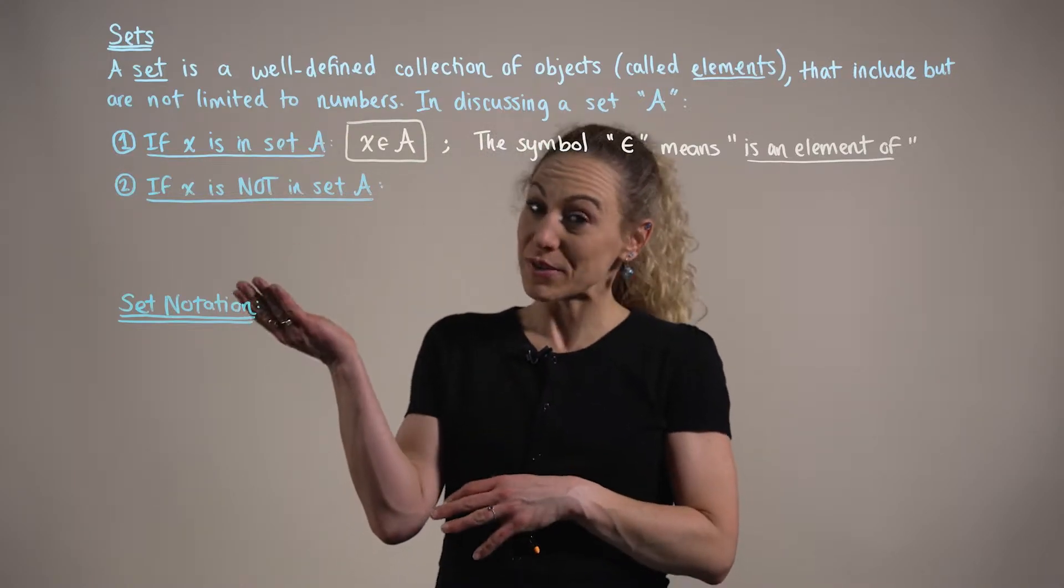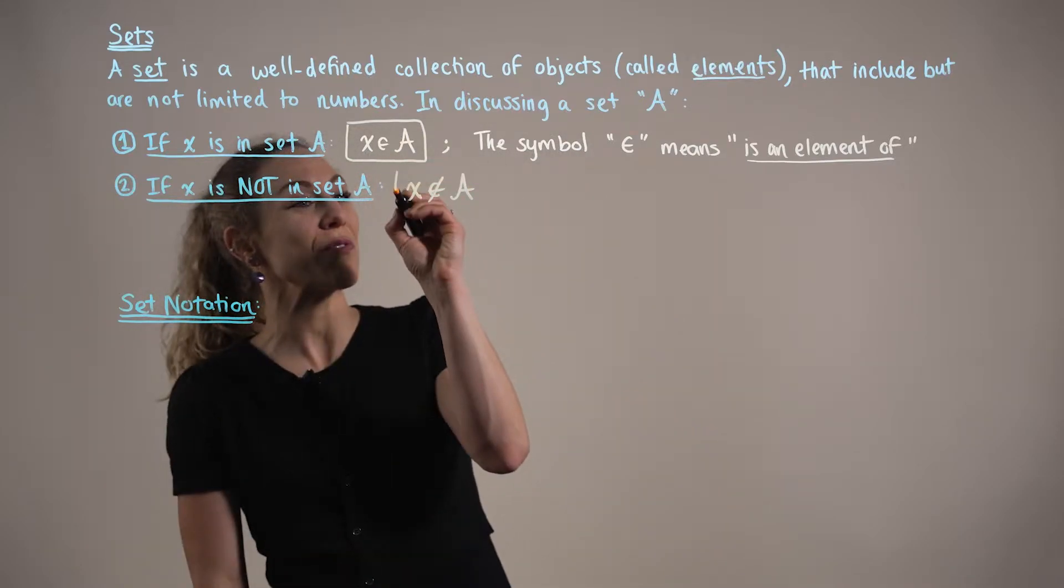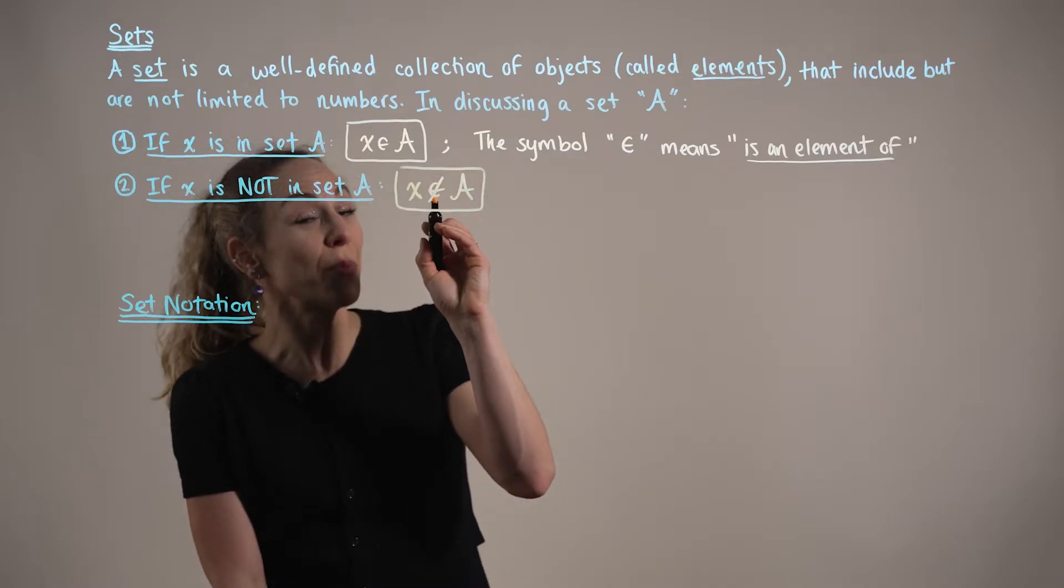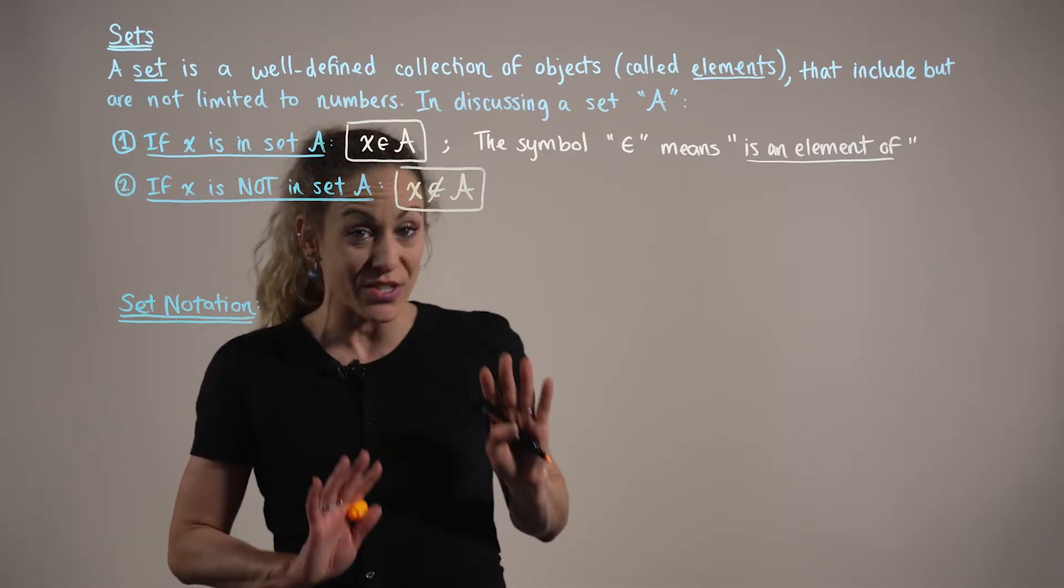Now how do we denote this if x is not in the set? Similar to the notation for when x is in the set, we use that same symbol but put a dash through it to indicate that x is not in the set.